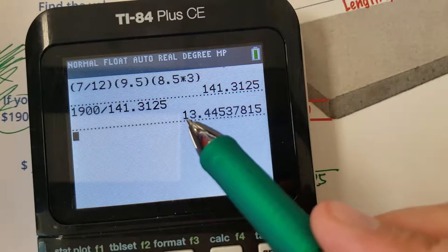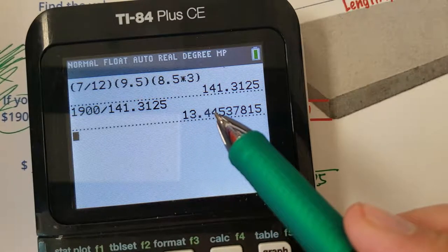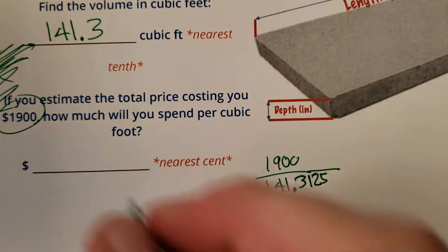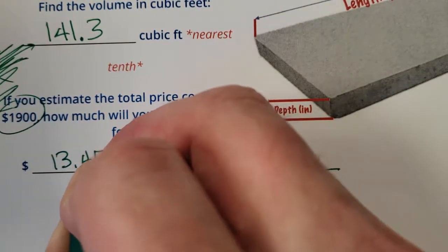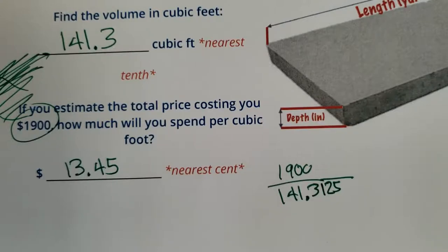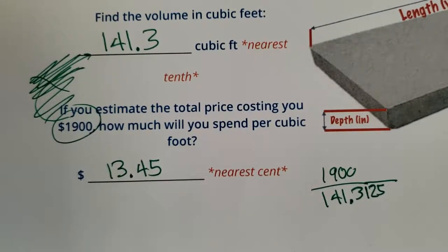It looks like it's going to be about $13.45, okay? So to the nearest cent, it's going to cost you about $13.45 for a cubic foot of concrete.